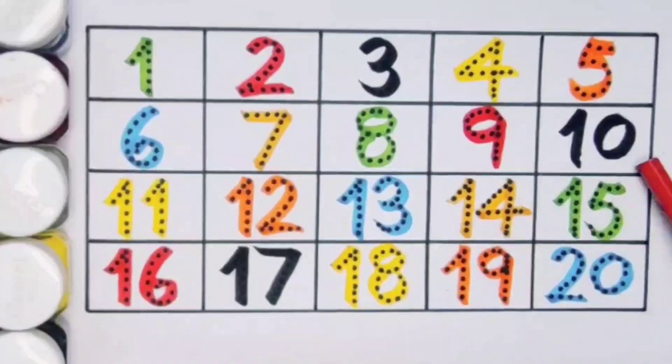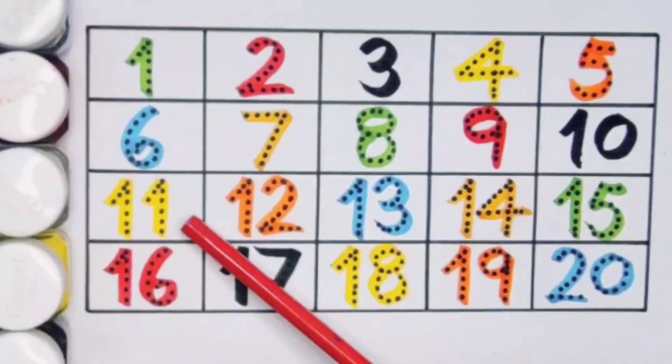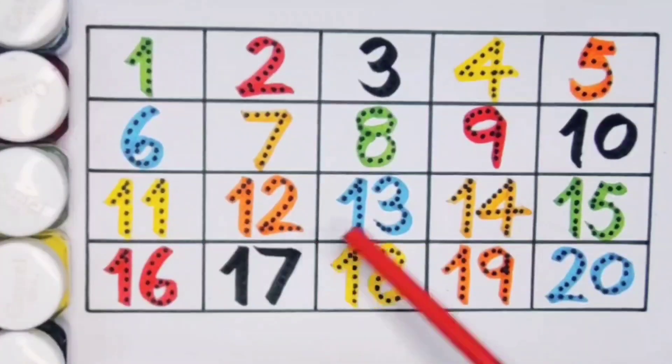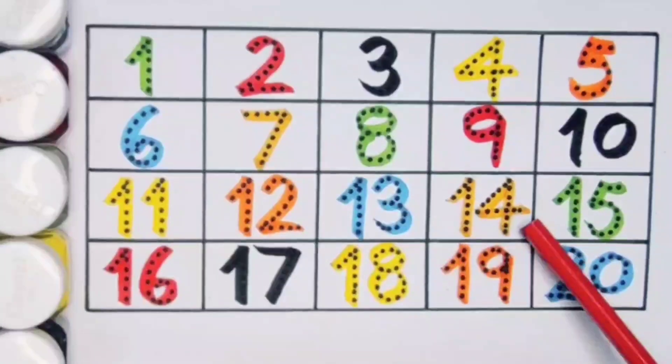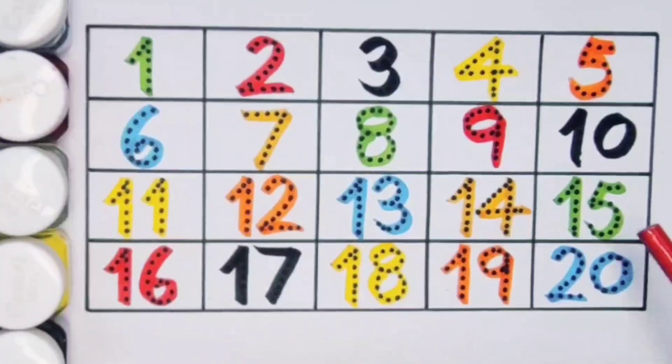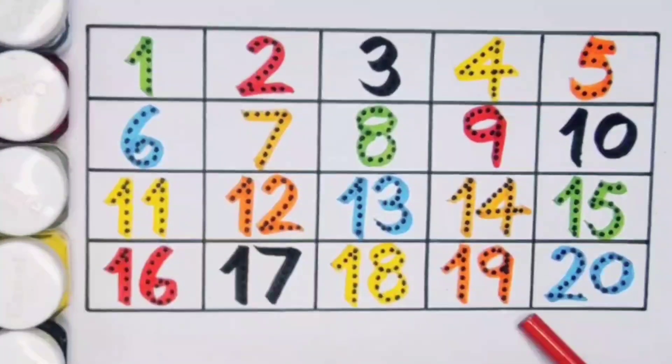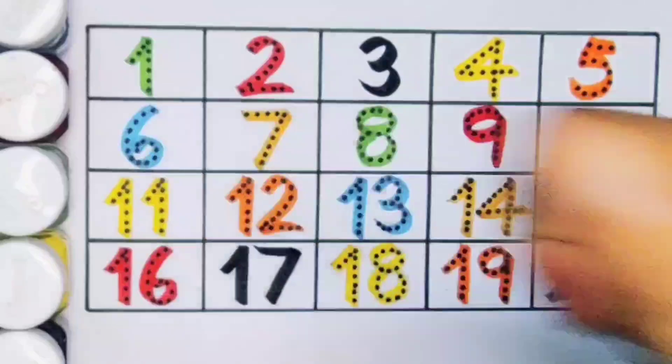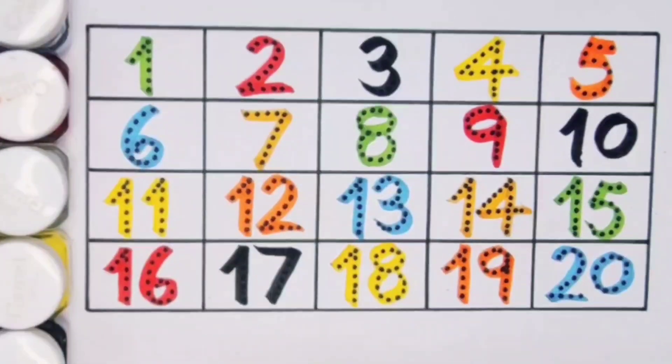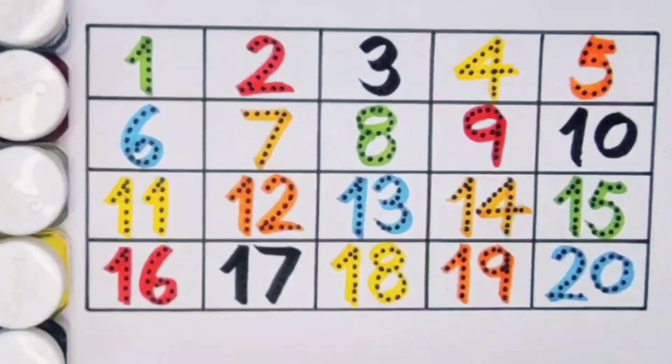One zero ten, one one eleven, one two twelve, one three thirteen, one four fourteen, one five fifteen, one six sixteen, one seven seventeen, one eight eighteen, one nine nineteen, two zero twenty. Thank you for watching my video. If you like it, please subscribe. Bye!